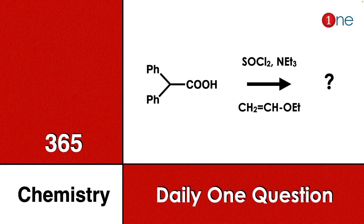Welcome to one chemistry. Here you have methane attached with two phenyl groups and an acid reacting with SOCl2 and base. Next up is the vinyl alcohol in the ether form — you have to guess what will be the final product.